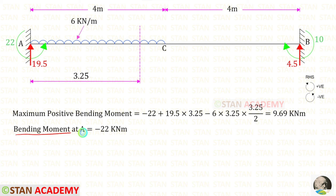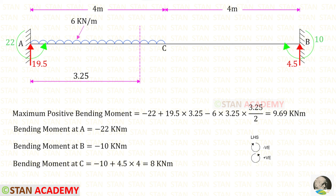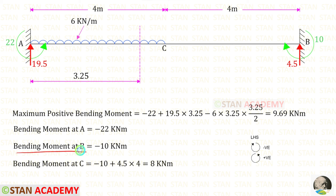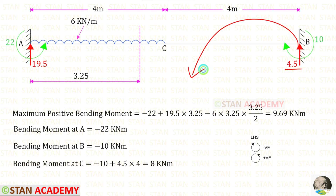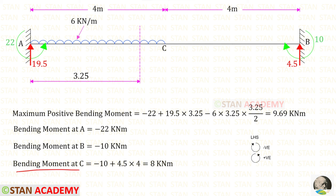Now let us find the bending moment at point A: Ma acts anti-clockwise so it is negative. At point B, Mb acts in the clockwise direction so it is negative. At point C, Mb acts clockwise (negative) and Rb acts anti-clockwise over a distance of 4, so 4.5 into 4. The bending moment at C is 8 kNm.